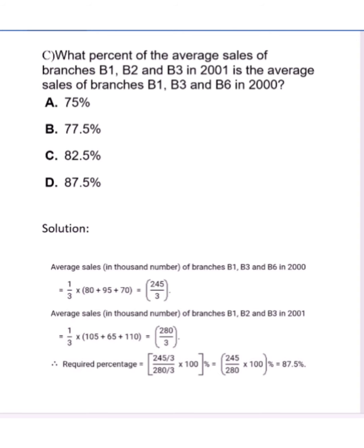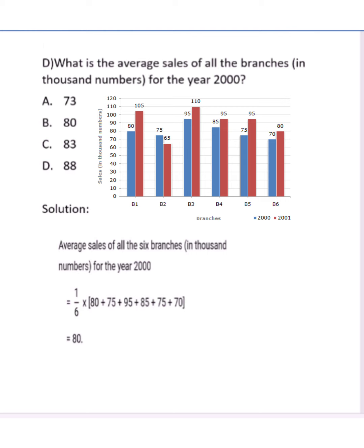Now move to question number 4. What is the average sale of all branches in thousand numbers for the year 2000? We have to take all the average. Six data points are given for 2000 in blue: 80, 75, 95, 85, 75, and 70. We take the summation of all, and for the average we divide by 6, so we get the answer as 80. Hence, the correct option is option B.